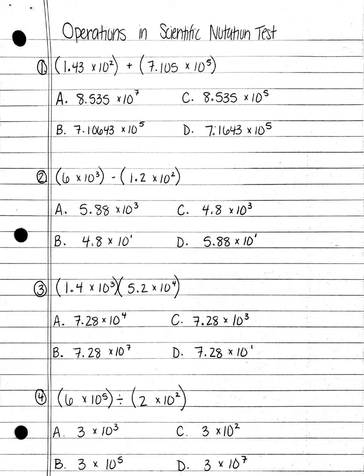Number 3. 1.4 times 10 cubed times 5.2 times 10 to the fourth power: A. 7.28 times 10 to the fourth; B. 7.28 times 10 to the seventh; C. 7.28 times 10 to the third; or D. 7.28 times 10 to the first power.